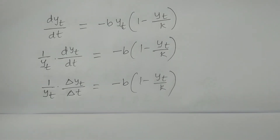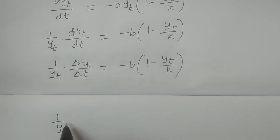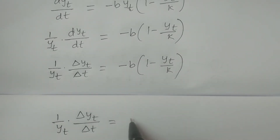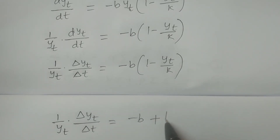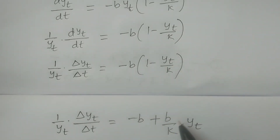Therefore, if you consider this and calculate to fit the logistic curve, this is: minus (1/y_t) times Δy_t/Δt is equivalent to b minus b, multiplying out, plus (b/k) multiplied by y_t. So, I am taking b times y_t divided by k, considering (b/k) as a constant times y_t.